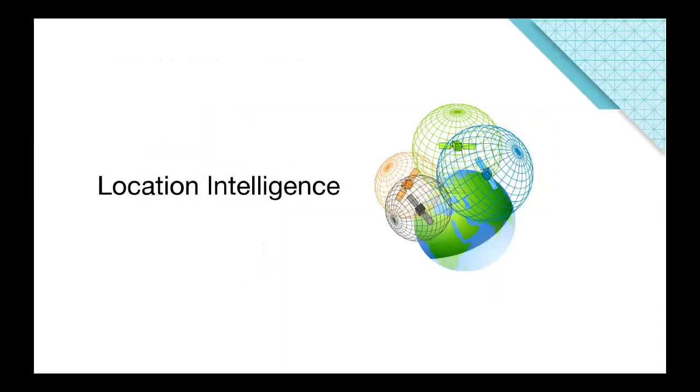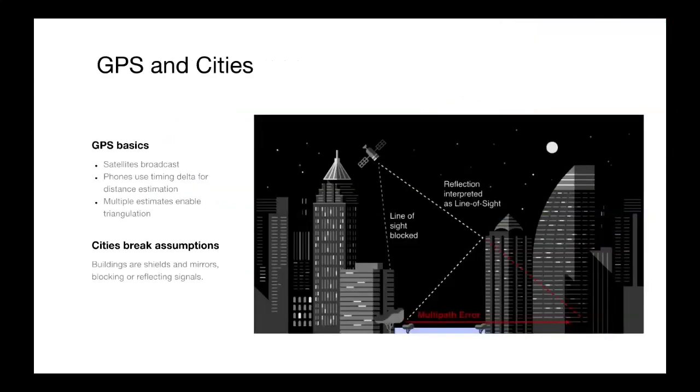I'll dive into location intelligence first. First thing to talk about is GPS and really quickly how GPS works. GPS actually consists of a constellation of satellites that are orbiting the earth. They're actually broadcasting down to the earth's surface. Your phone acts as a receiver. It sees some number of these satellites and gets a message from those satellites.